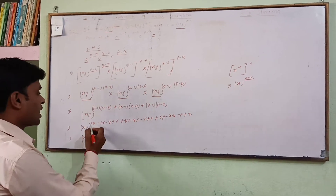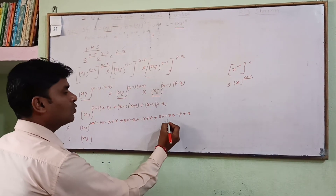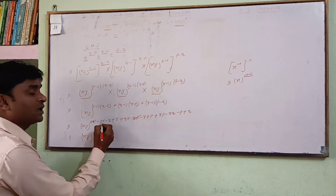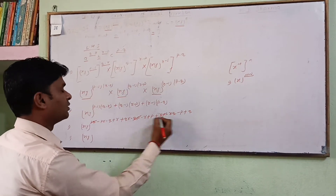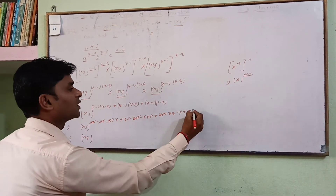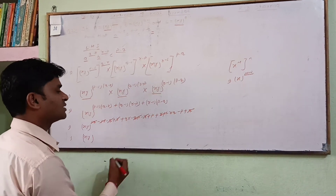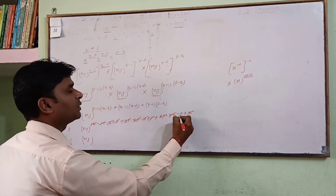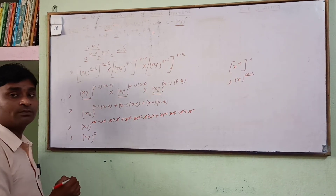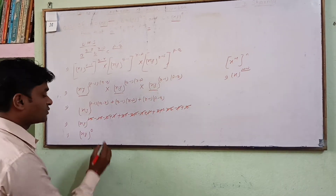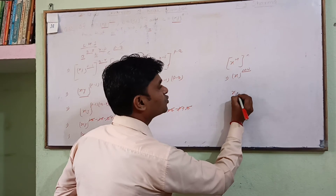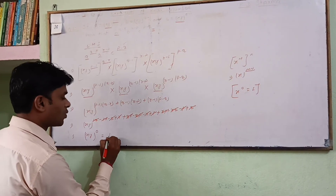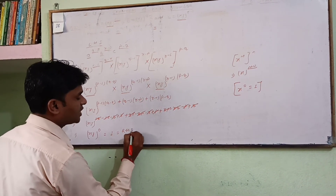So xy is raised to the combined power. We see that pq and minus pq cancel, pr and minus pr cancel, qr and minus qr cancel, q and minus q cancel, r and minus r cancel, and p and minus p cancel — leaving the power as zero. Since xy to the power 0 equals 1, the answer is 1, which equals RHS. Hence proved.